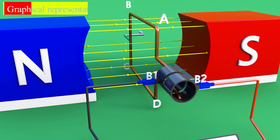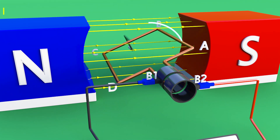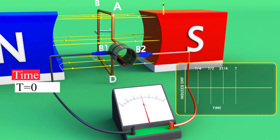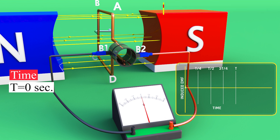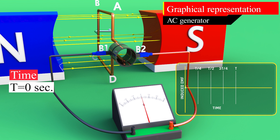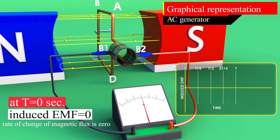Next, we need to see how the induced EMF changes over time. In this graphical representation of induced EMF, we assume that the armature needs T seconds to complete a full rotation. At time T equals 0 seconds, armature ABCD is in a vertical position, with part AB up and part CD down. Parts AB and CD move parallel to the magnetic field at that moment, so the rate of change of magnetic flux is zero. Therefore, the induced EMF is zero.